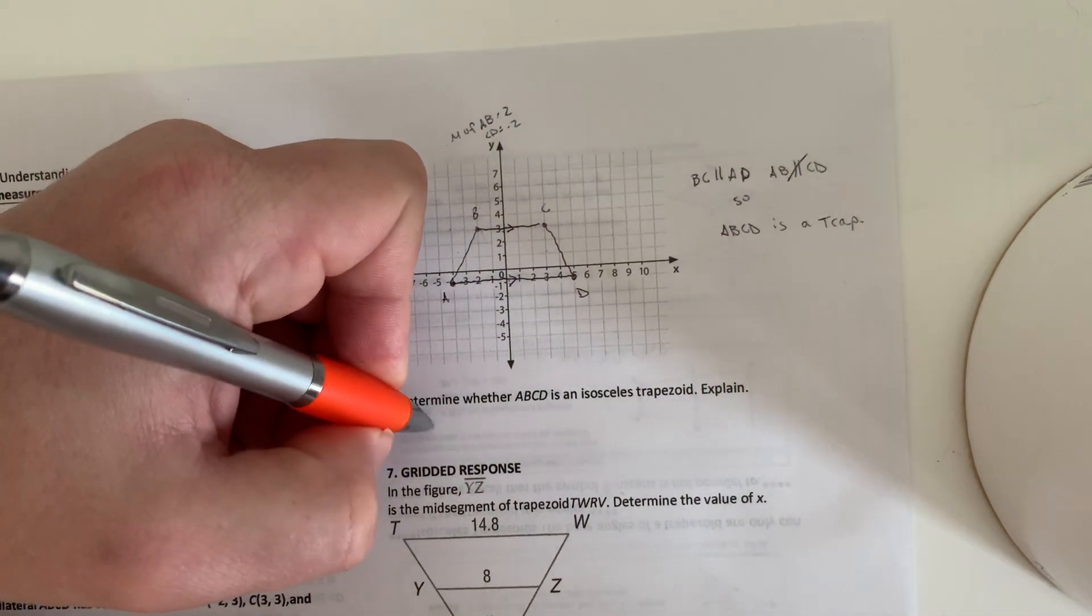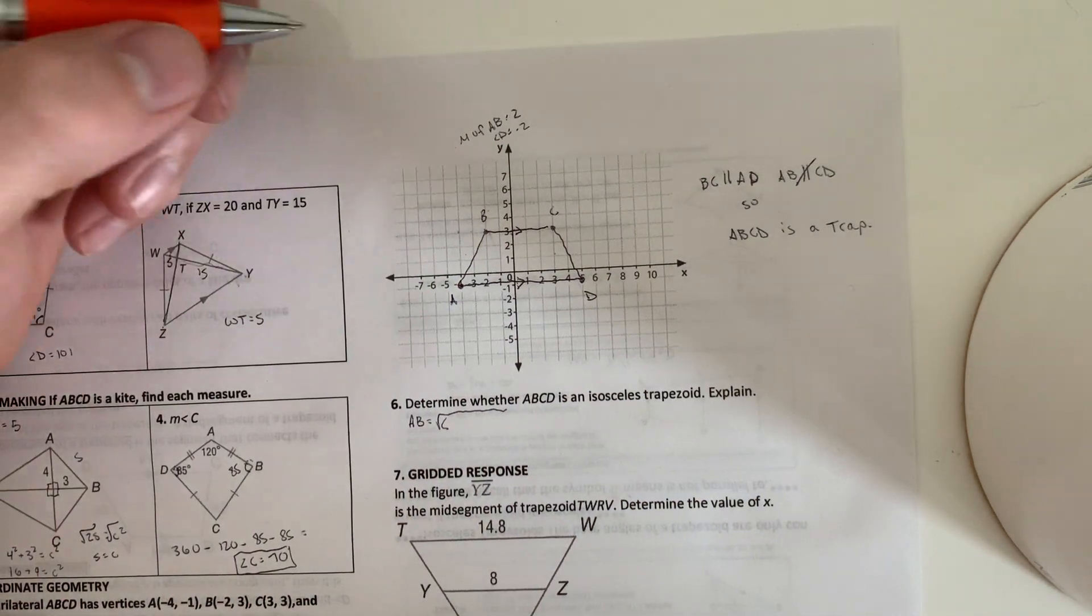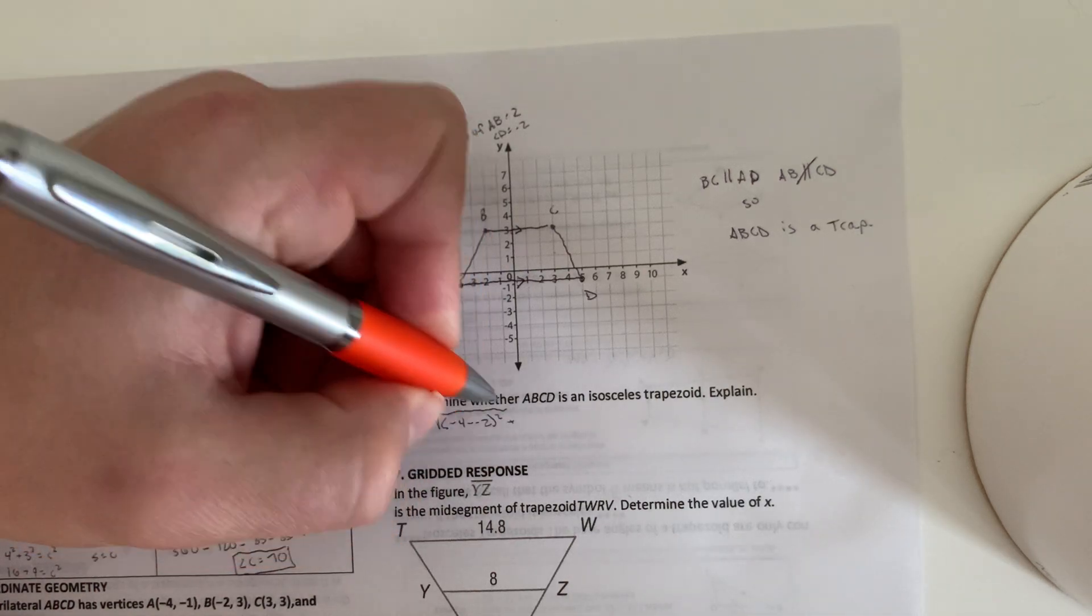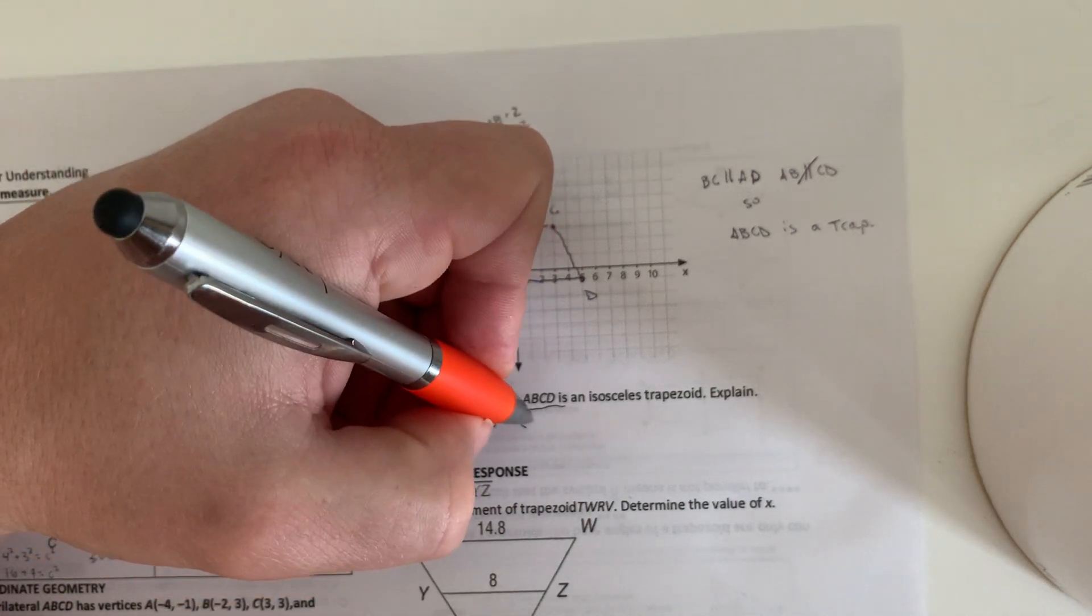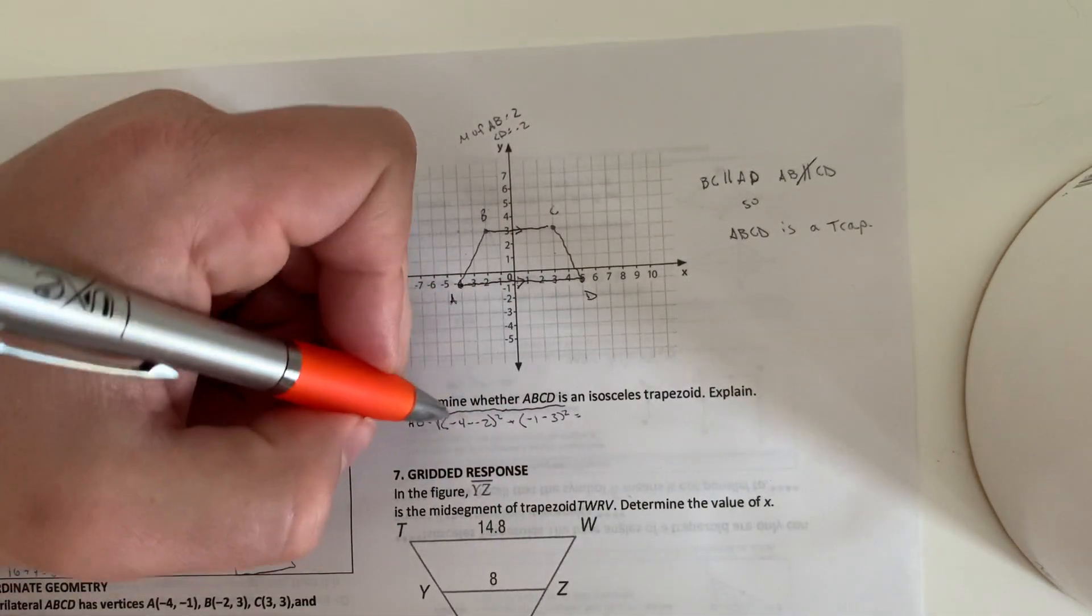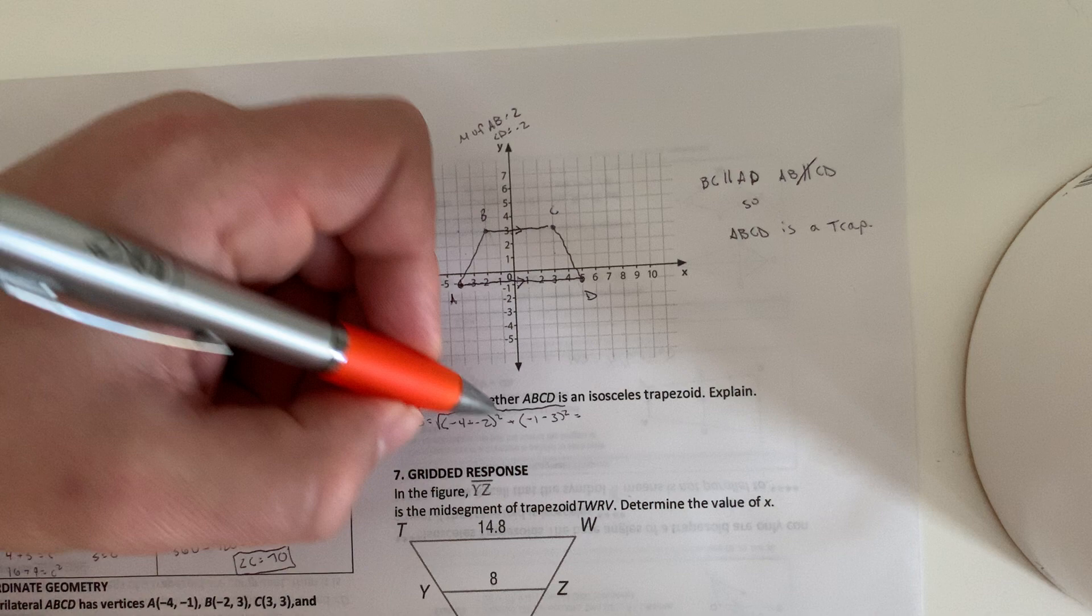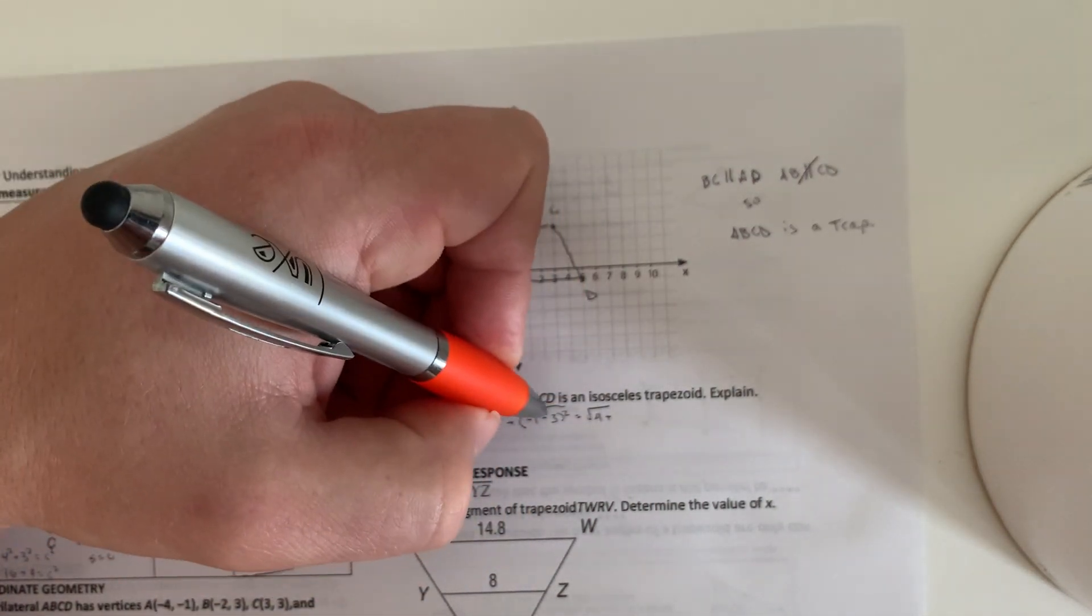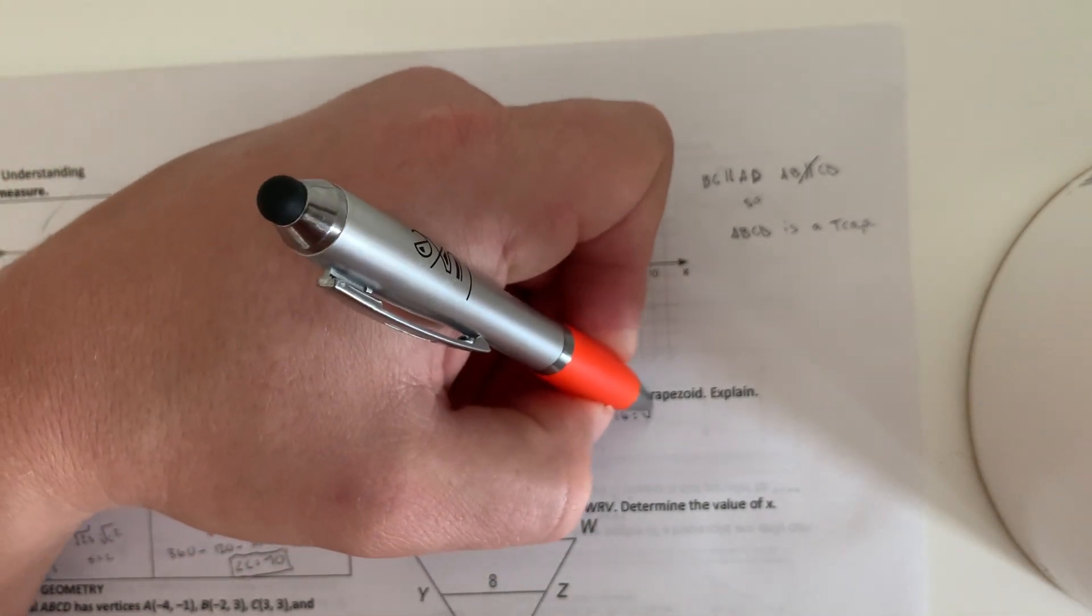So AB, find the distance of that. We will have negative 4 minus negative 2 squared plus negative 1 minus 3 squared. So negative 4 plus 2 is negative 2. So negative 2 squared is 4. Plus negative 4 squared is positive 16. So that's going to be the square root of 20.